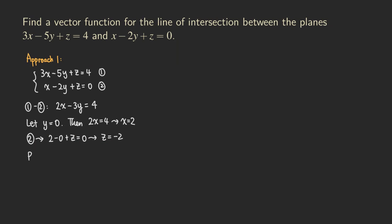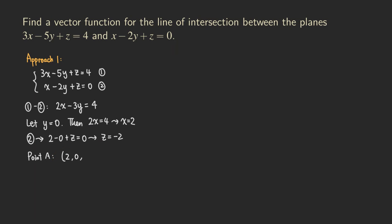So one point — we can call this point A — is (2, 0, −2).